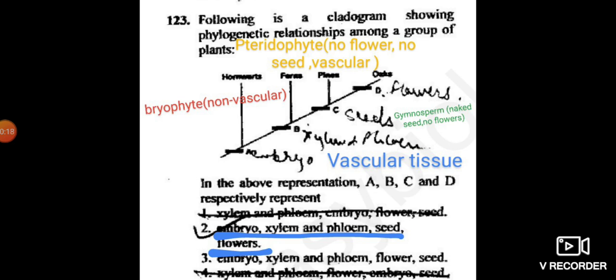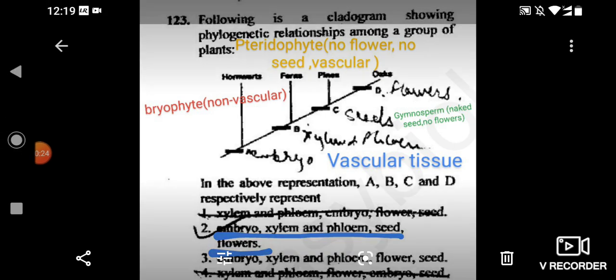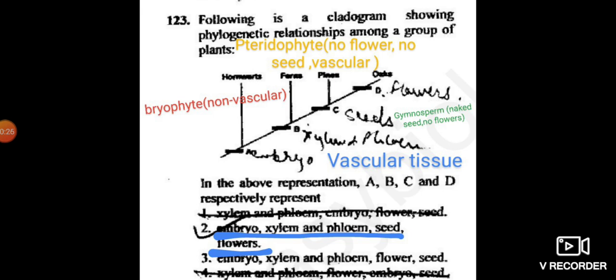The question is the following is a cladogram showing the phylogenetic relationship among a group of plants. They have given a group of plants. First one is the hornwort in A, in B ferns, in C pines, and in D oaks.